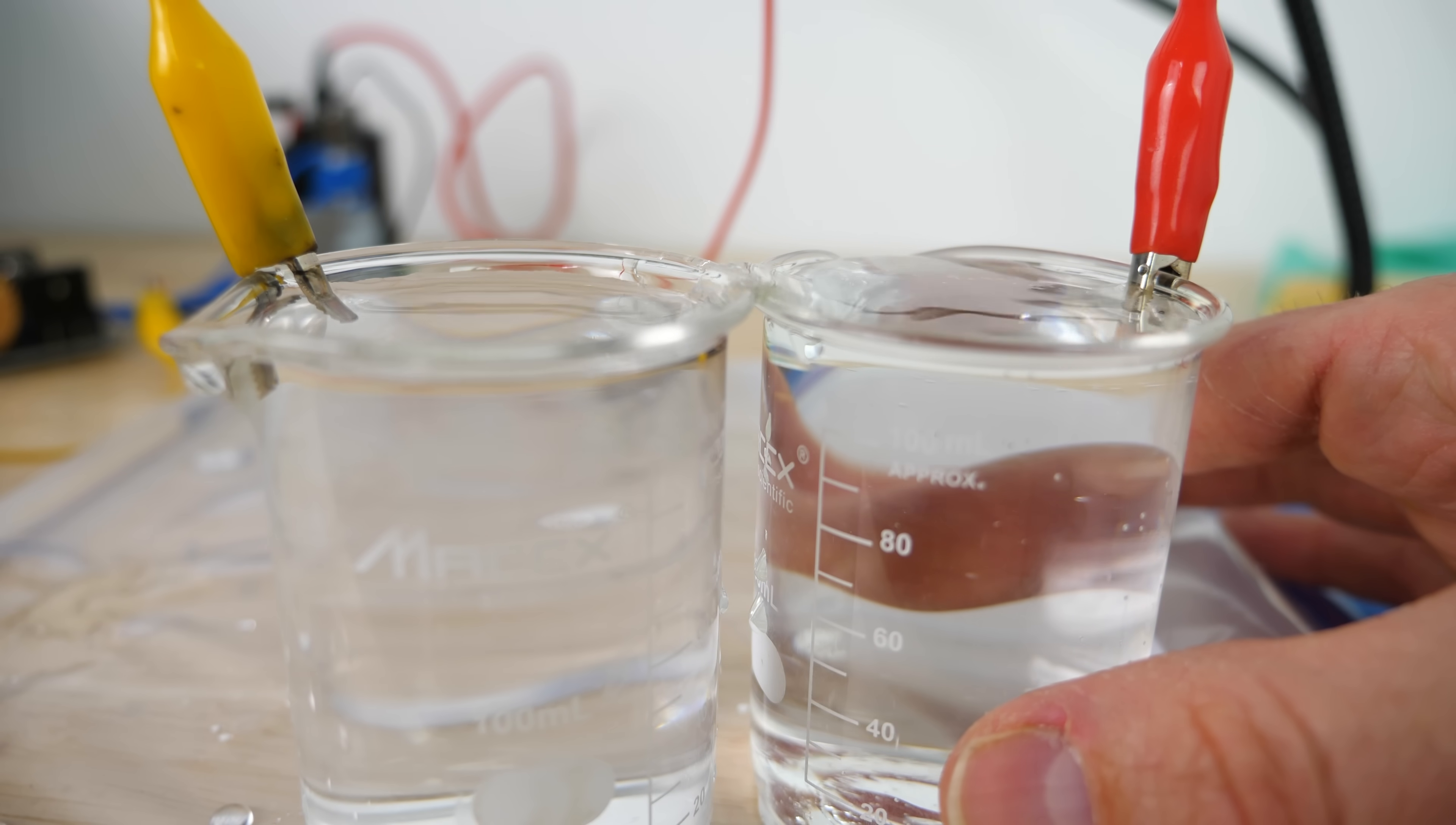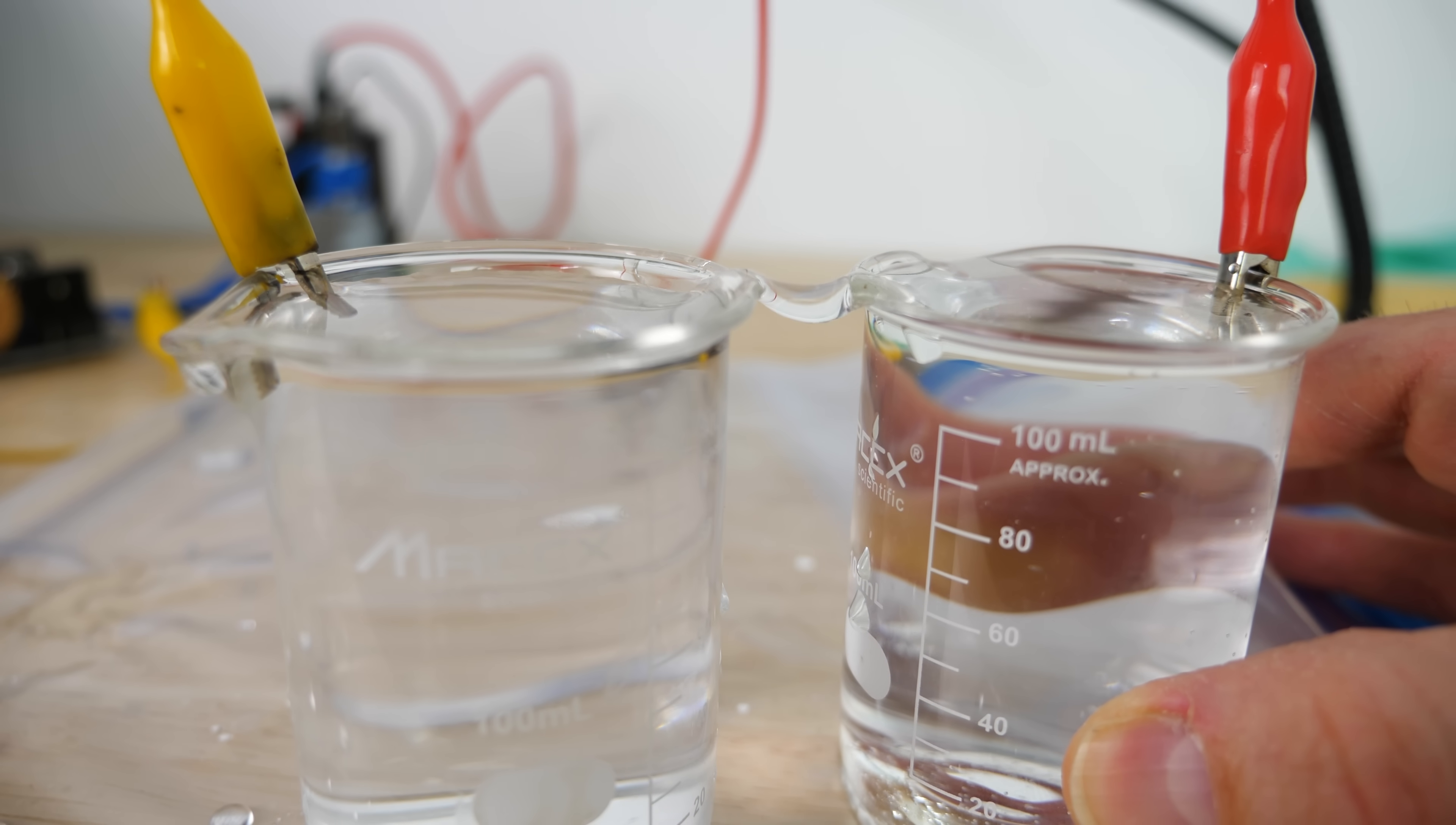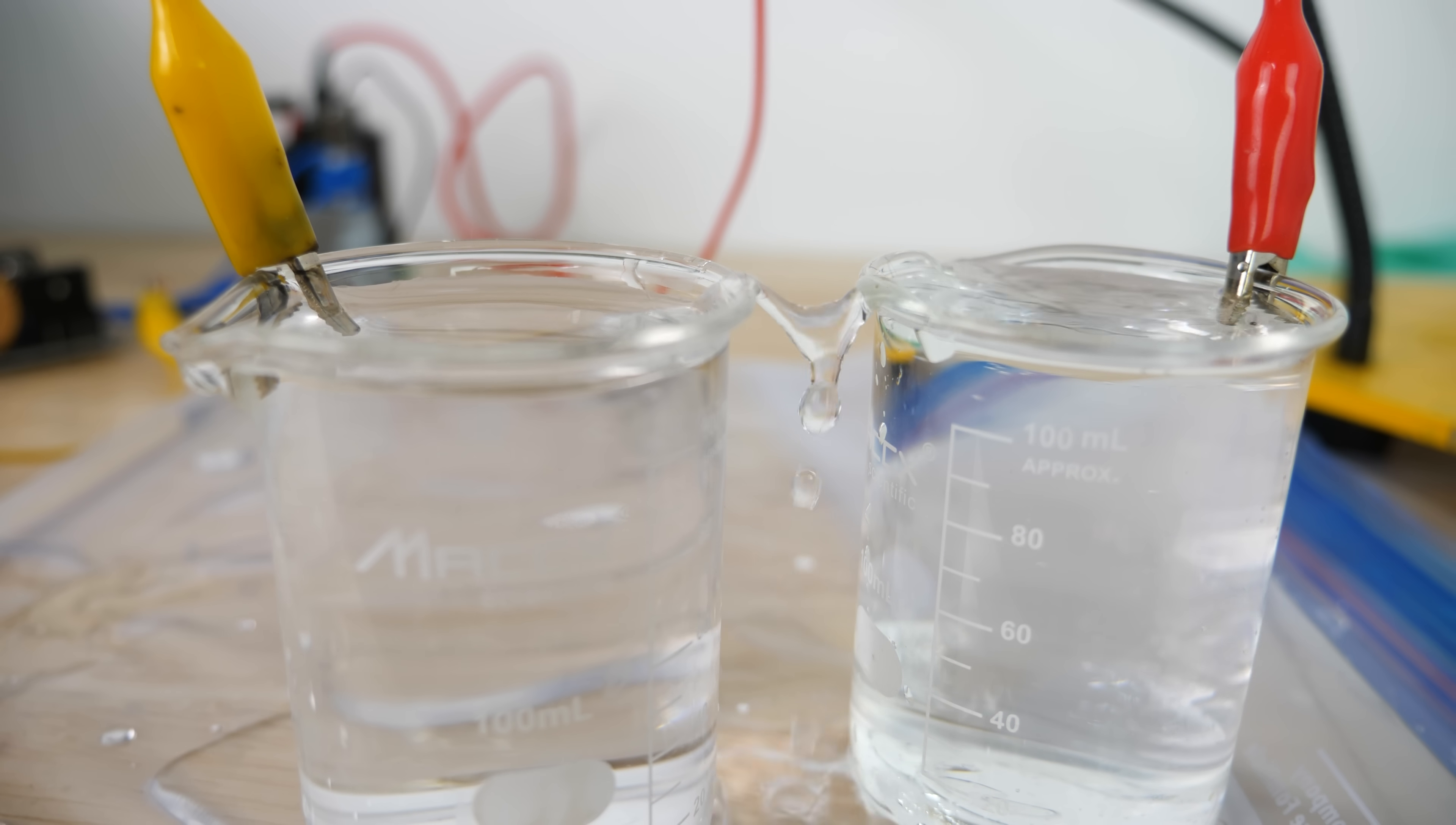And not only that, once the water connection is formed, then I can separate the two beakers and the water bridge actually stays stable and connects the two beakers. It flows up and around the rim across to the other one. This is amazing and completely unexpected from what we normally see happen with electricity and water.